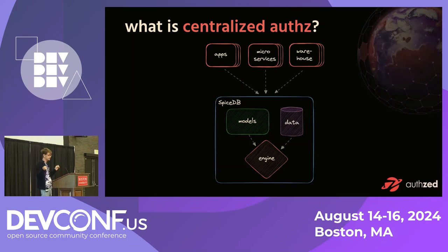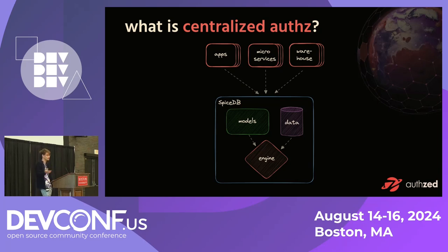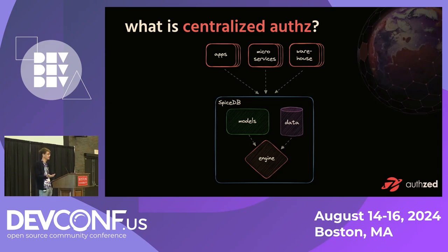A powerful example of centralized authorization that Google actually uses: if you open Gmail right now and try to email a Google Doc URL to somebody you haven't shared it with yet, Gmail will pop up a warning saying 'you didn't share this yet — do you want to share this with this person?' There's no code being shared between Gmail and Google Drive at all. What Gmail is doing is querying Zanzibar asking, 'Does this person actually have access to this doc?' and using that to improve the Gmail user experience.